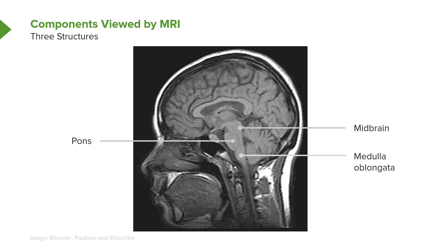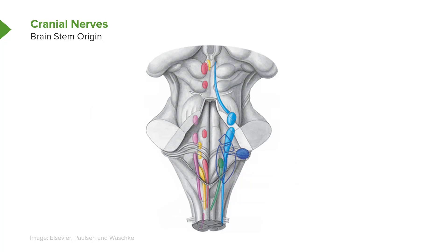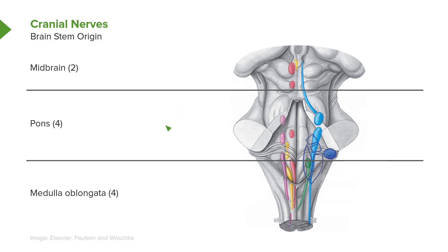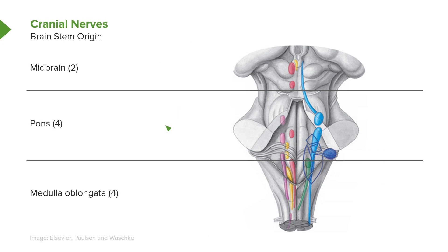Ten of the twelve cranial nerve nuclei are housed in the brainstem structures, and you can see several of those nuclei in this illustration. Two of the nuclei are housed in the midbrain, four are housed in the pons, and four of the cranial nerve nuclei are housed in the medulla oblongata — so it's two, four, and four.